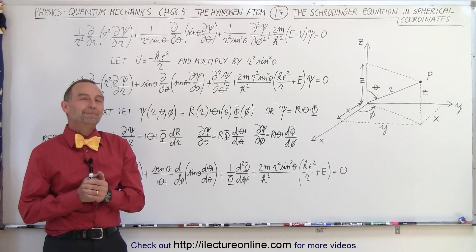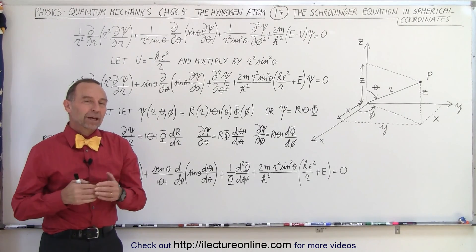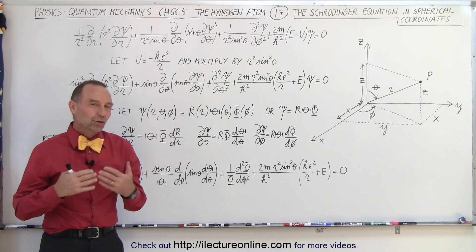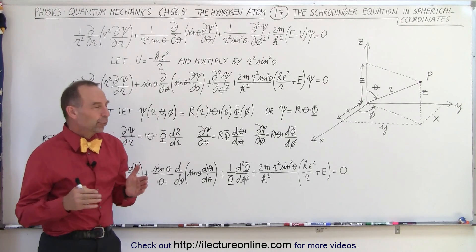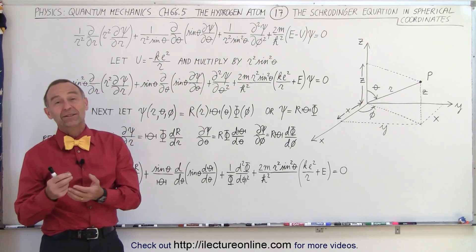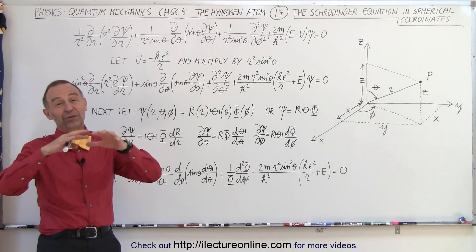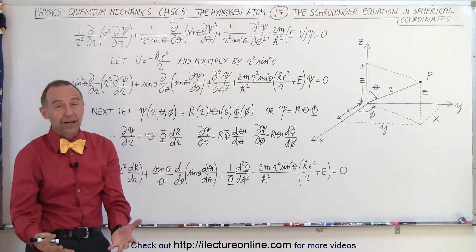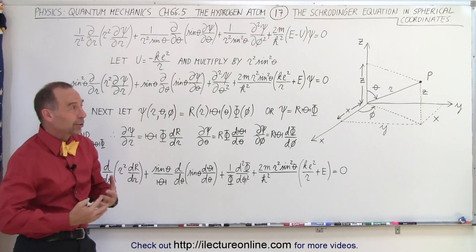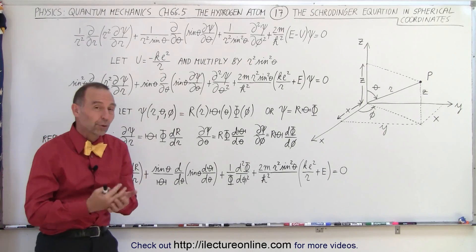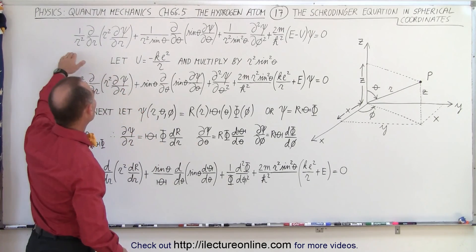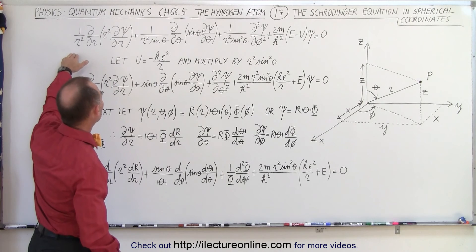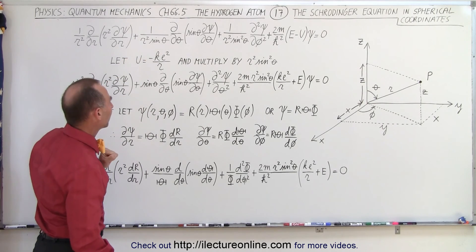Welcome to What Lecture Online. Expressing the Schrödinger equation in the Cartesian format is not very practical when we're dealing with a spherical object, so obviously going to a spherical coordinate system is much better. Here's the Schrödinger equation formatted in spherical coordinates.